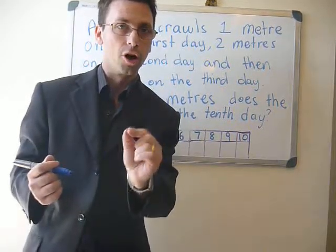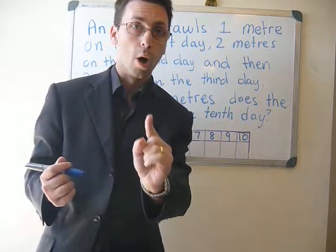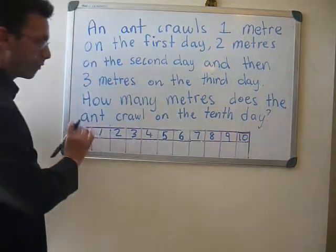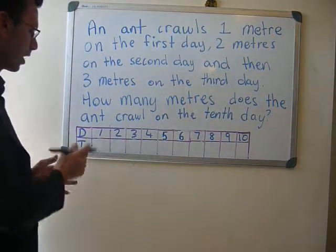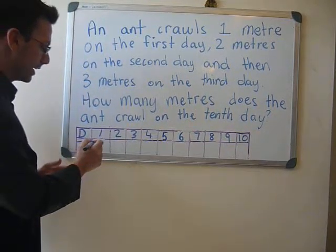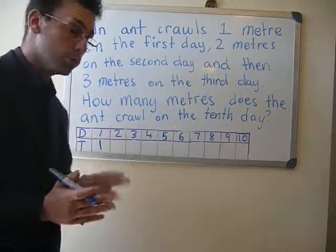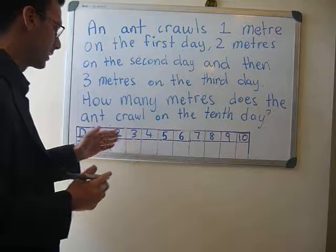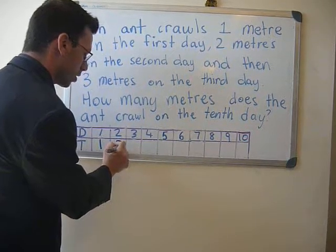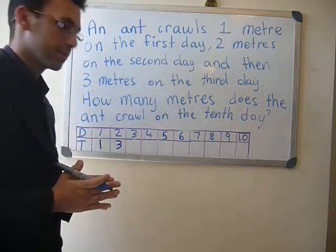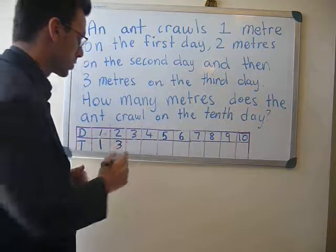Okay, on the first day it was one metre. So I've drawn a little table here to help you. D stands for day, T stands for the total, and this is how we are going to work it out. After one day it is one metre.